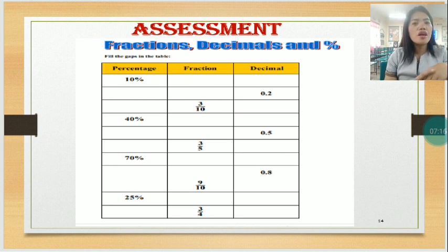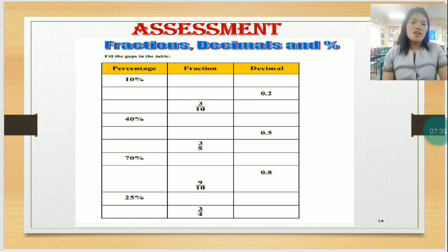For percentage, you have there 10%, followed by 40%, then we have 70%, then 25%. For fraction, we have 3 tenths or 3 over 10, we have 3 over 5, then 9 over 10, then we have 3 over 4.